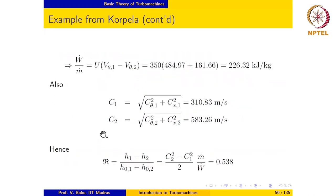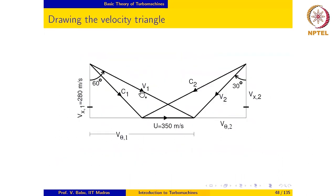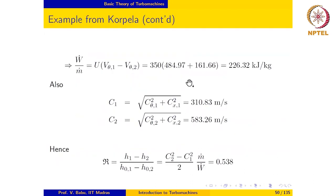The specific power output may be evaluated as follows: Ẇ/ṁ equals the blade speed U times (Vθ1 minus Vθ2). We note that Vθ2 is in the opposite direction to Vθ1, which means Vθ1 and Vθ2 are added together, giving us a specific power output of 226.32 kJ per kg.